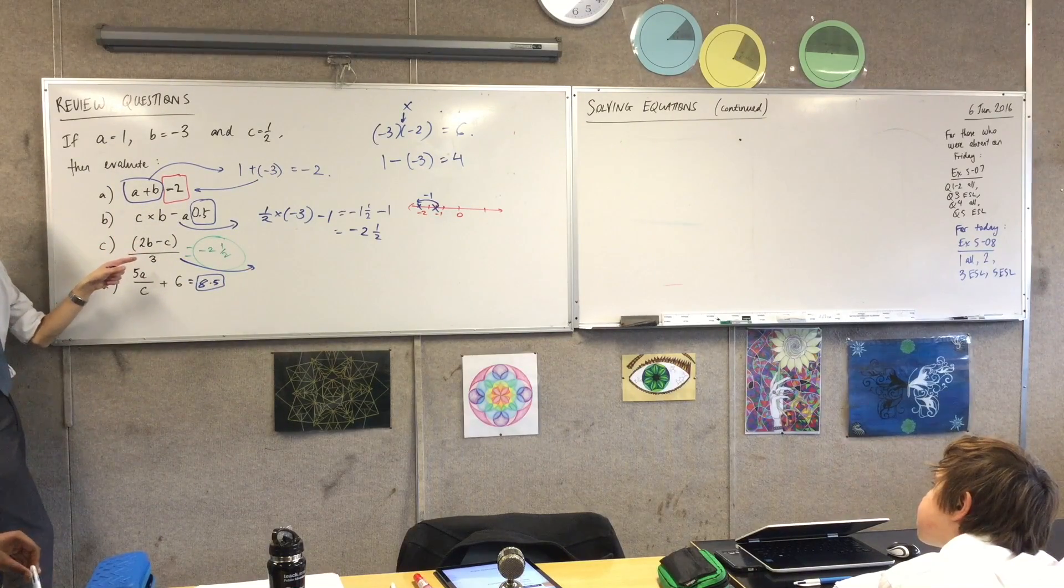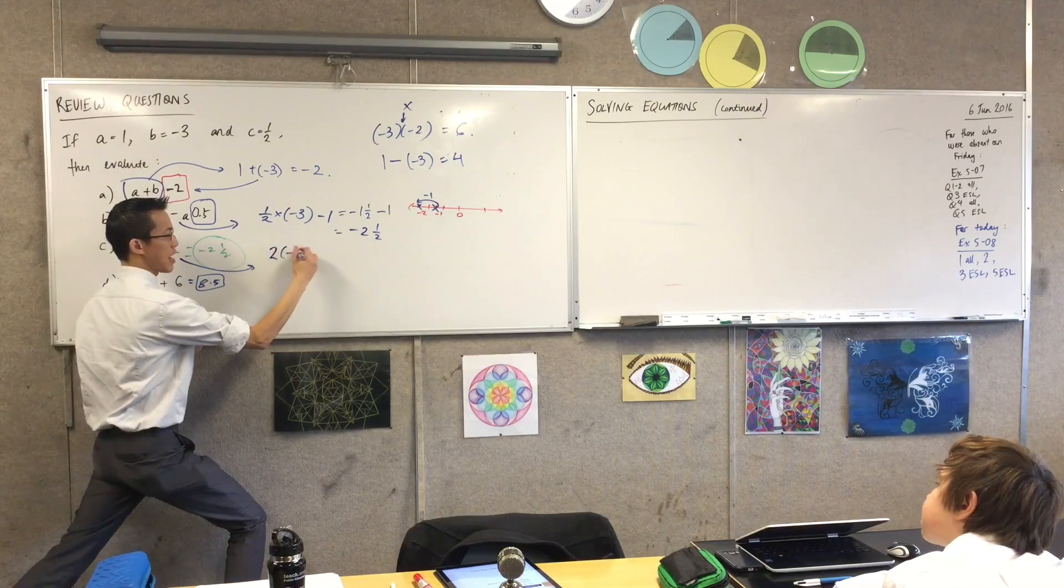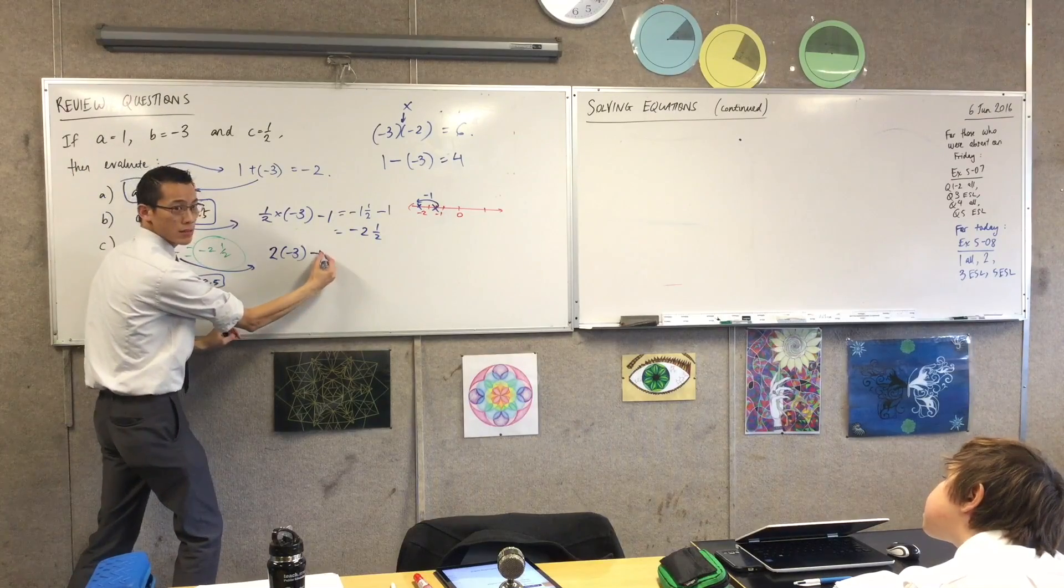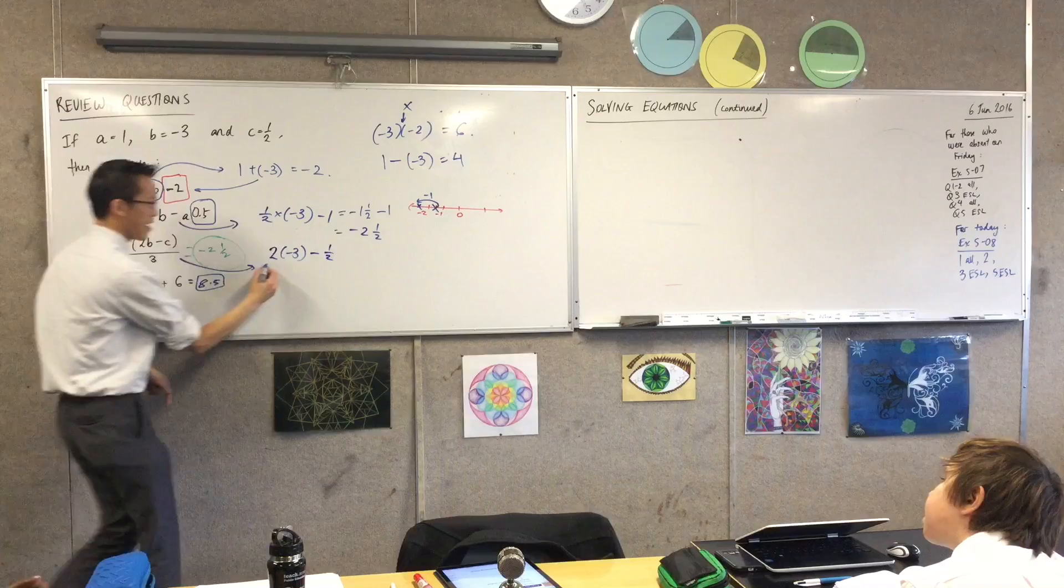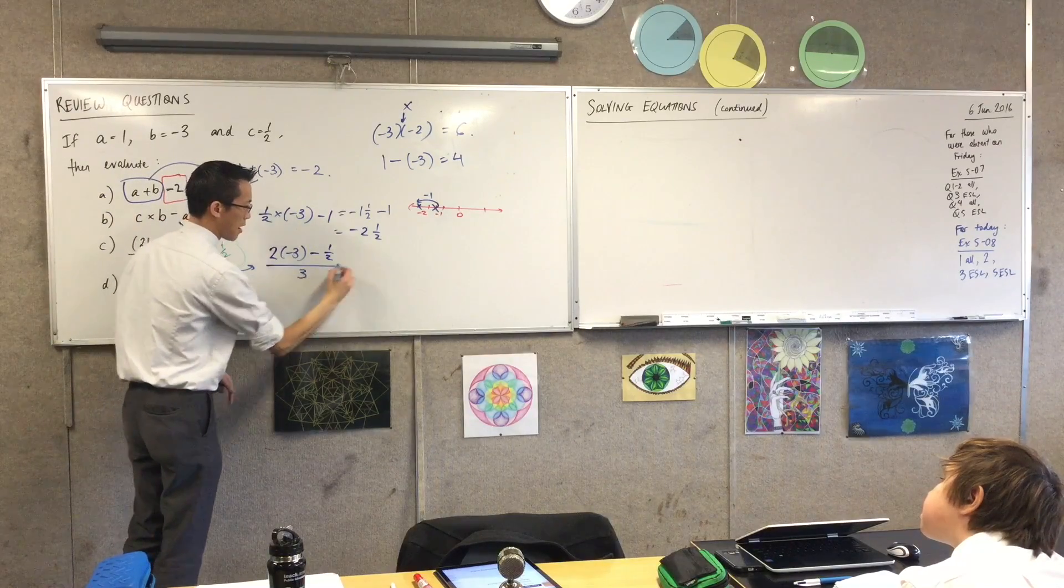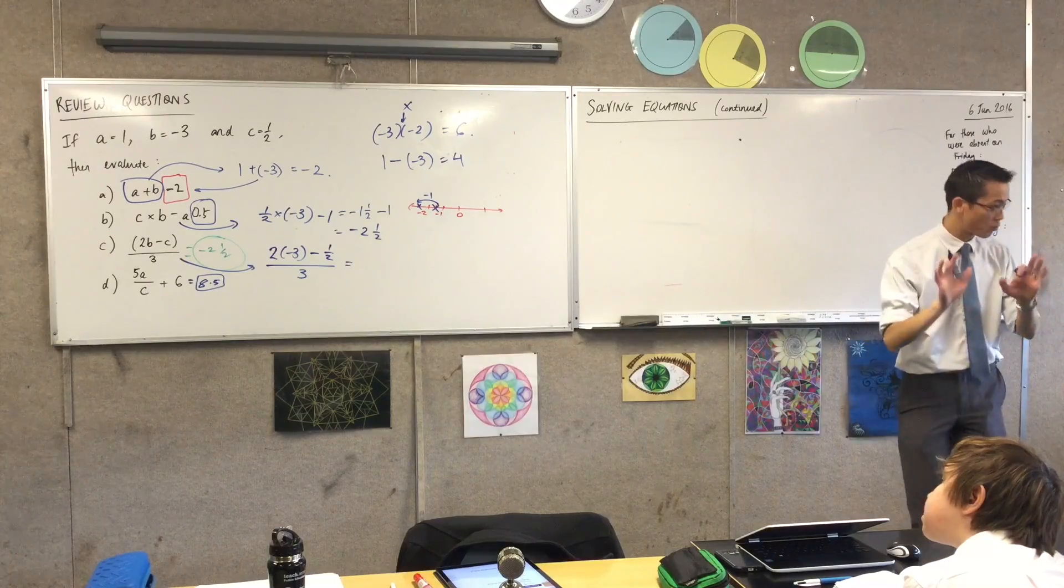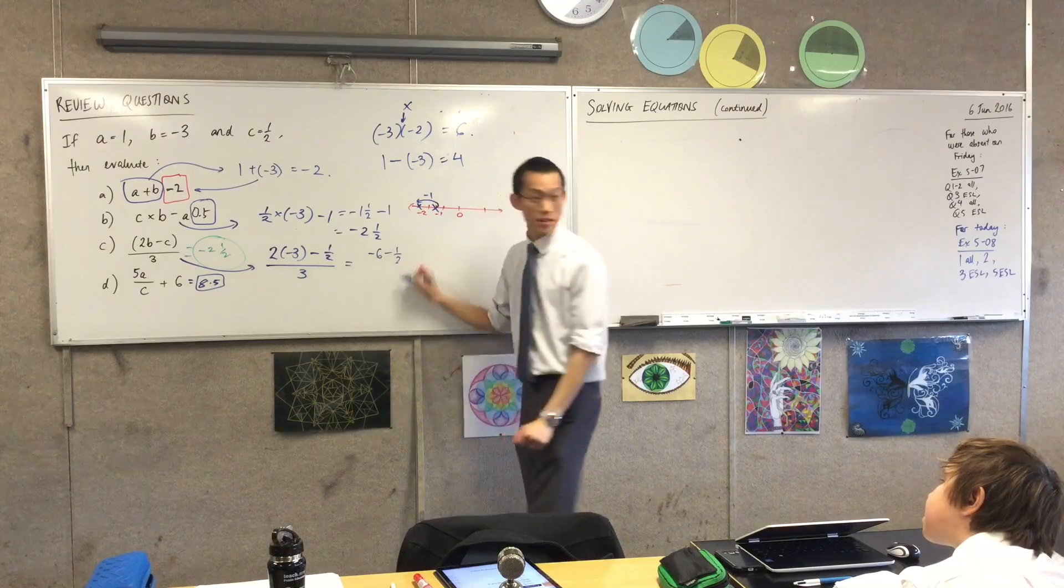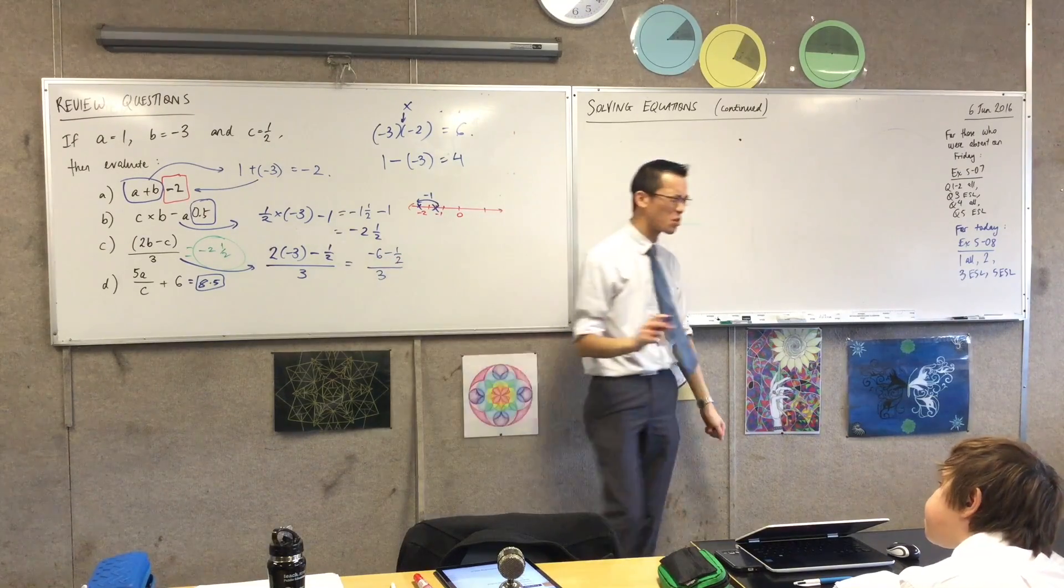2b, what's b again? Negative 3. Negative 3. So I'm just going to write that. 2 times negative 3. Minus c. Minus a half. Yep, that's what's on the top there. And then I'm going to divide by 3. Okay? 2 times negative 3. I'm going to just do one step at a time. 2 times negative 3. Yeah? Negative 6. Negative 6. I've got a minus a half there. And I haven't done anything with this.